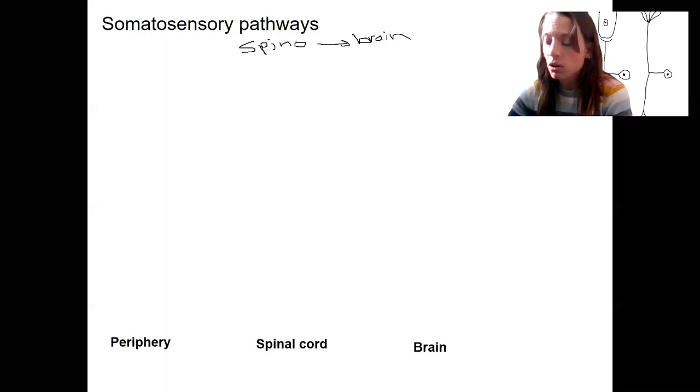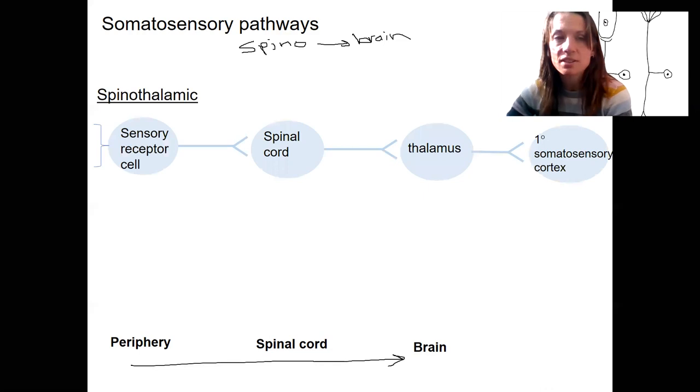Let's look at this. All of these, we're talking about sensory. We're going from the periphery to the brain, and we're going to have some neurons allowing us to do that. First of all, here is the spinothalamic. There is a sensory receptor cell. This would be, for example, a mechanoreceptor.